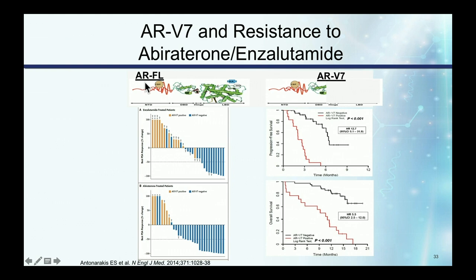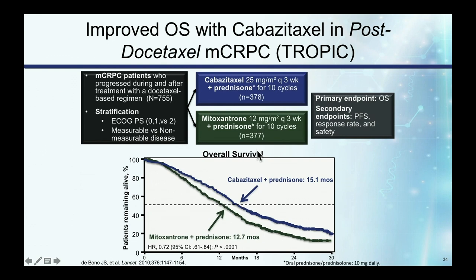AR-V7 testing is now commercially available. Patients positive for AR-V7 generally don't respond to enzalutamide or abiraterone and have a shorter time to progression. Those negative for AR-V7 show more PSA responses, though secondary resistance mechanisms can still cause non-response. AR-V7 positive patients may be candidates for chemotherapy instead, although we lack prospective trials to confirm this.